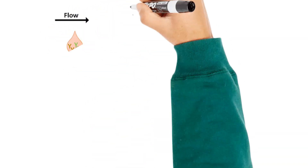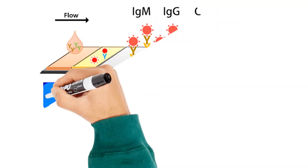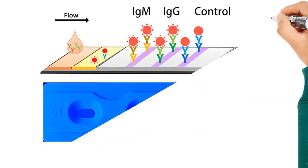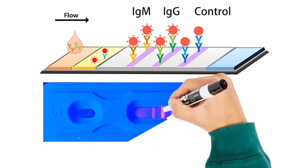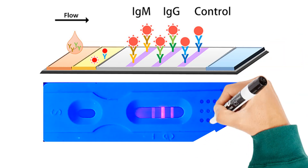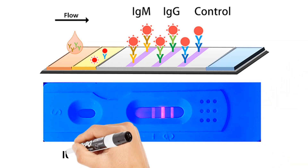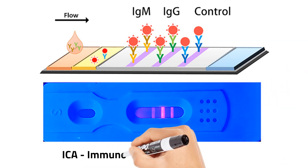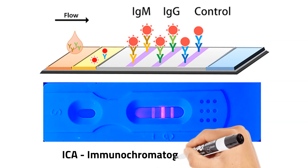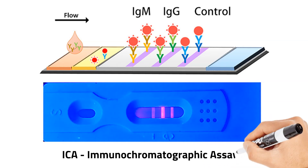Immunochromatographic assay, or ICA, also referred to as a lateral flow assay or strip test, is a simple and rapid immunoassay technique usually used in point-of-care testing. The assay consists of a porous membrane containing immobilized capture antibodies. When a sample is applied to the membrane, the target analyte, if present, binds to the capture antibody. The resulting complex then migrates along the membrane and interacts with labeled detection antibodies, generating a visible signal, such as a colored line, which is visually interpreted.